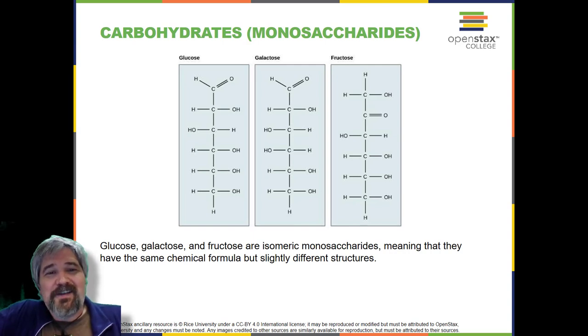Monosaccharides may exist as a linear chain or as ring-shaped molecules. In aqueous solutions, they are usually found in the ring form. The chemical formula for glucose is C6H12O6. In most living species, glucose is an important source of energy. During cellular respiration, energy is released from glucose, and that energy is used to help make adenosine triphosphate (ATP).